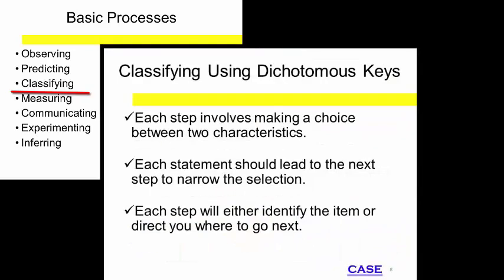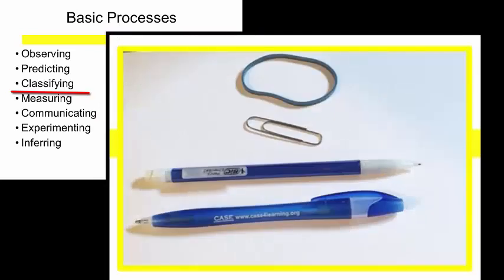When you use a dichotomous key, you must make choices about the structure or appearance of the items you're trying to identify.